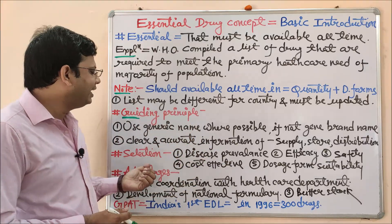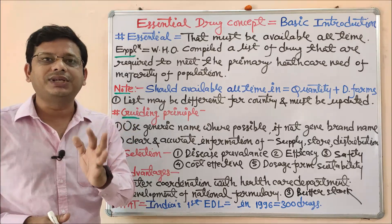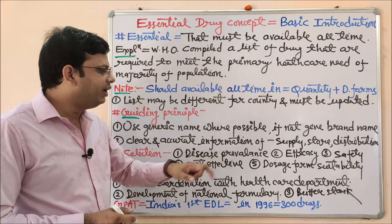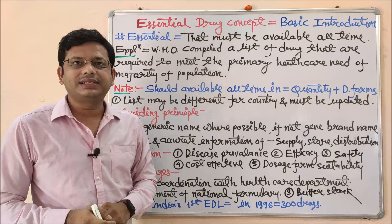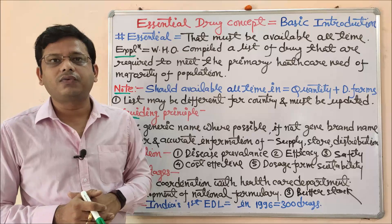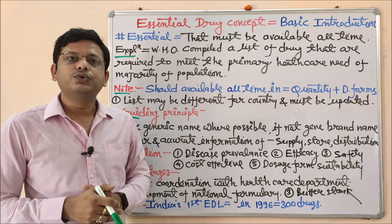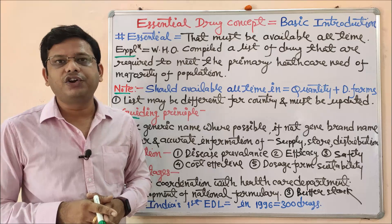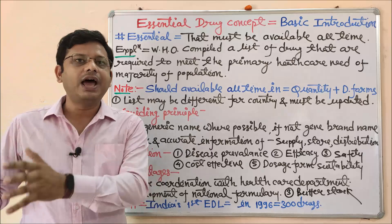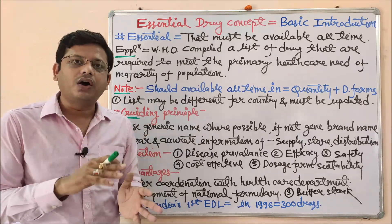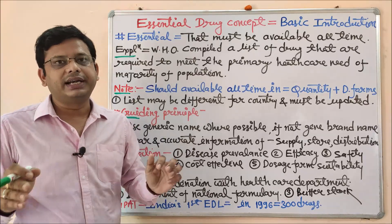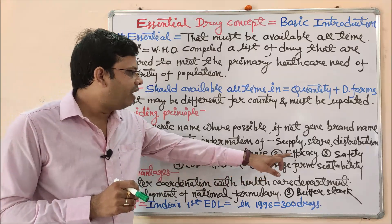Now, what are the selection parameters for the essential drug list? First: disease prevalence — which diseases are occurring most frequently at a given location. If a state has many cases of liver disease, maximum medicines will belong to the liver tonic category. In another state it may be tuberculosis, dysentery, or diarrhea. Whichever disease occurs most often, the corresponding drug should be available at any time and at any cost.